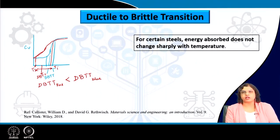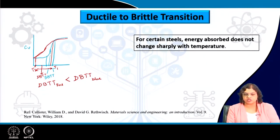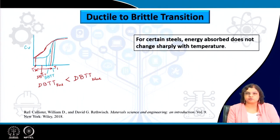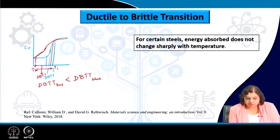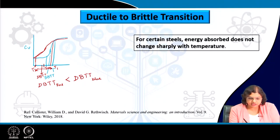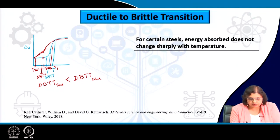At temperature T1, both the blue and the red curves coincide, meaning both absorb equal values of energy at higher temperature. At a comparatively lower temperature, again both absorb almost similar values of energy — both show brittle failure. But if we are talking about any temperature in between T1 and T2, say at Tm, the red one absorbs a higher amount of energy compared to the blue one.